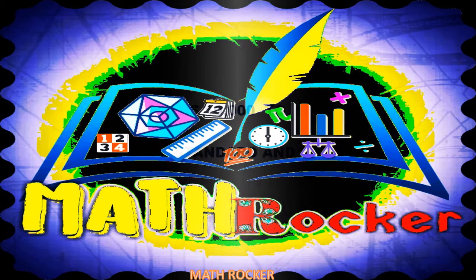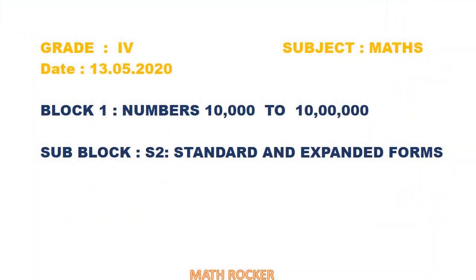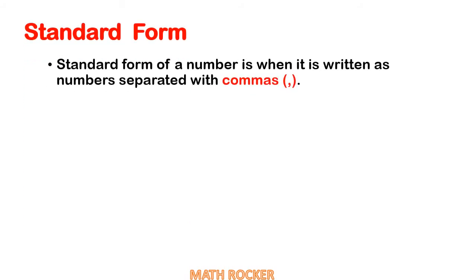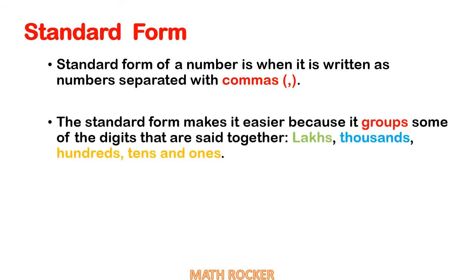Hello everyone, good morning children. Today we are going to learn about standard and expanded forms. The standard form of a number is when it is written as numbers separated with commas. A number which is separated with commas is called the standard form of a number. The standard form makes it easier because it groups some of the digits that are set together.